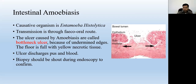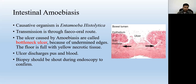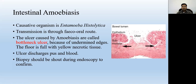You can see in the picture these very deep, narrow ulcers. These ulcers are usually present in the ileum and have undermined edges, which is why they are deep. The floor is filled with yellow necrotic tissue. The ulcer discharges pus and blood into the lumen of the intestine.